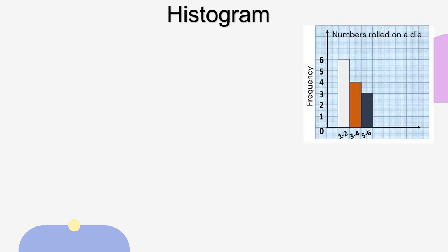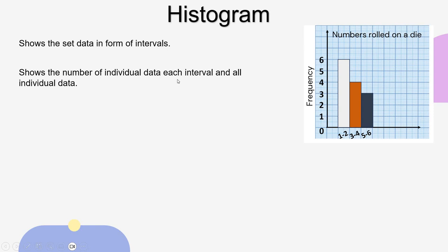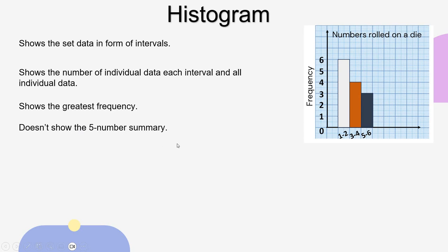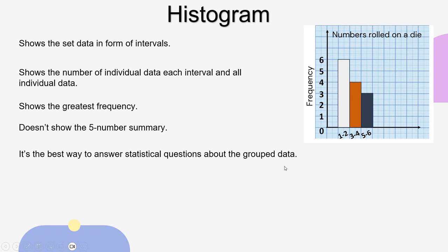The histogram shows data in the form of intervals. It shows the number of individual data in each interval and the total count by adding all frequencies — for example, 6 plus 4 plus 3. It also shows the greatest frequency. However, the histogram does not show the five-number summary, and it is the best way to answer statistical questions about grouped data. That's all for today. Thanks and see you soon insha'Allah.